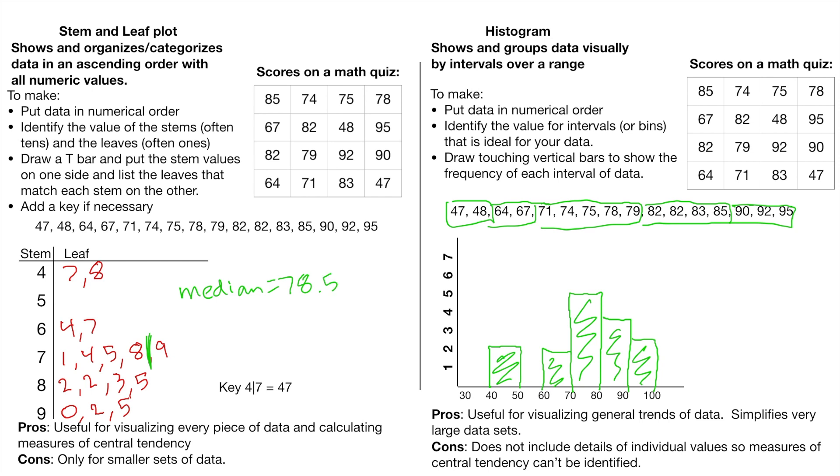We could also figure out the mode really easily if we were looking at this, because we can see there's two 82s. So the mode is going to be 82. We could also calculate the mean if we needed by adding all those values together and dividing by how many there are.